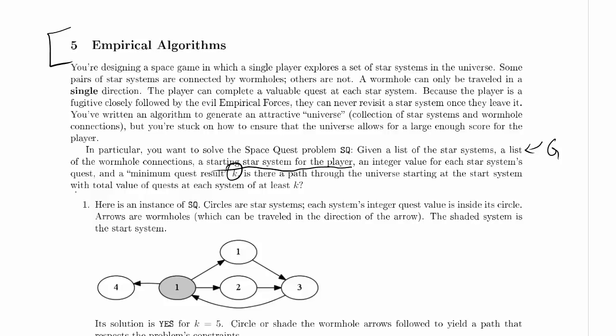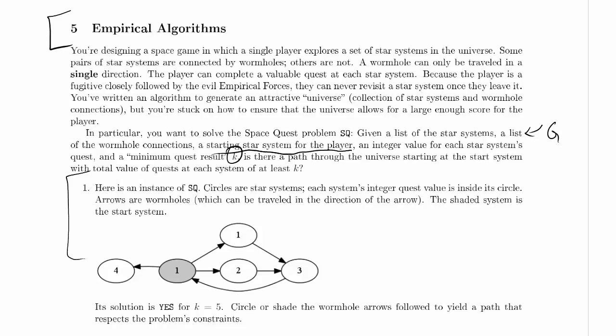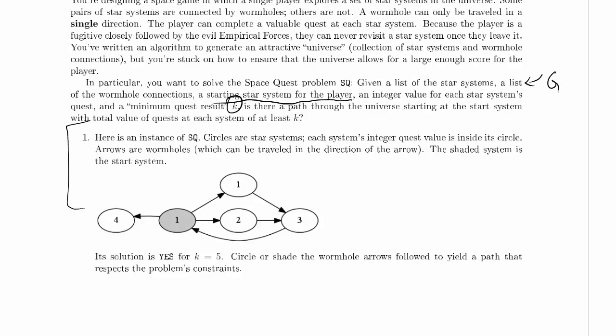So here's an instance of SQ. I'm going to dive into problem one, because problem one is all about understanding the problem. Circles are star systems. Each system's integer quest value is inside its circle. Arrows are wormholes, which can only be traveled in the direction of the arrow. The shaded system is the start system. The solution to this problem is yes when K equals 5. We're supposed to circle or shade the wormhole arrows followed to yield a path that respects the problem's constraints.